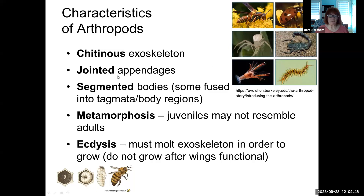Clearly from these pictures, there are appendages — mostly legs in many cases — that are jointed. They have segmented bodies. If you look at a centipede, most of the segments are similar. But if you look at a spider or an insect, there are three major body regions in insects, and each of those body regions during development is formed from a number of body segments.